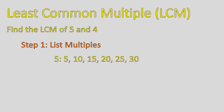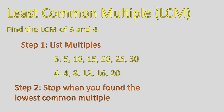Now we're going to do the same thing with 4. What are the multiples of 4? 4 times 1, 4 times 2, 4 times 3, etc. So the multiples of 4 are 4, 8, 12, 16, 20. I just listed a couple of them because you can stop as soon as you find one multiple that is the same. In this case, 20 is the same — it's the lowest multiple that is the same on both lists. I recommend you list one set of multiples, then start the next list and stop as soon as you come to one that's common.